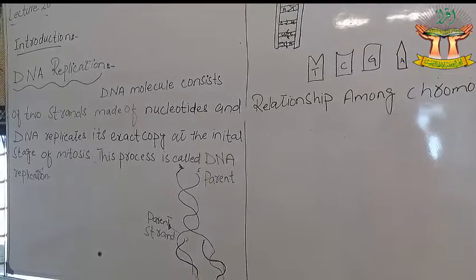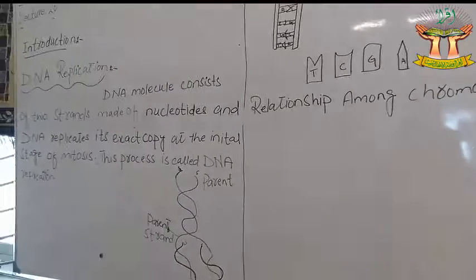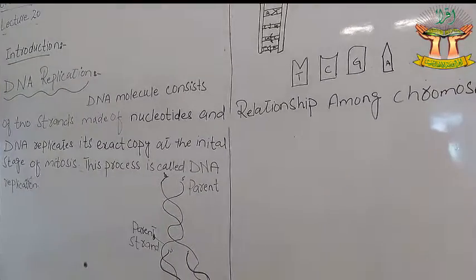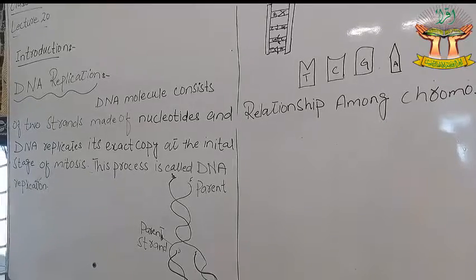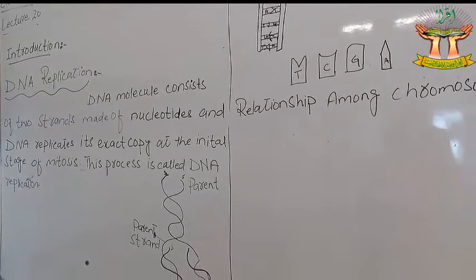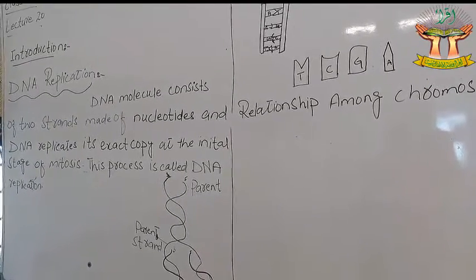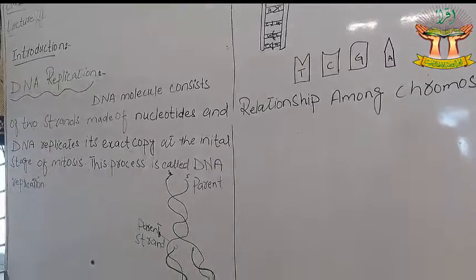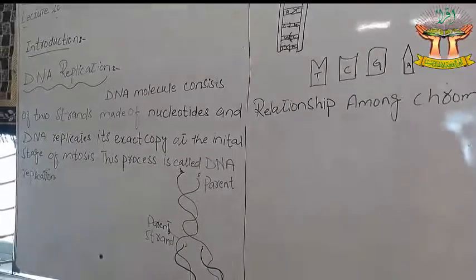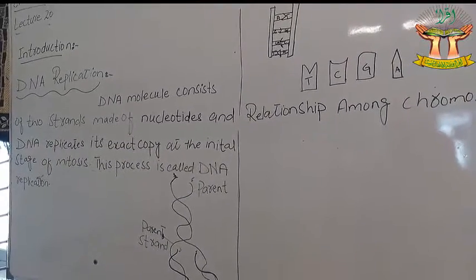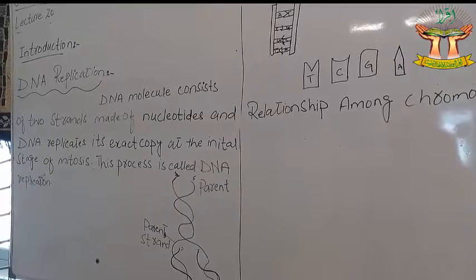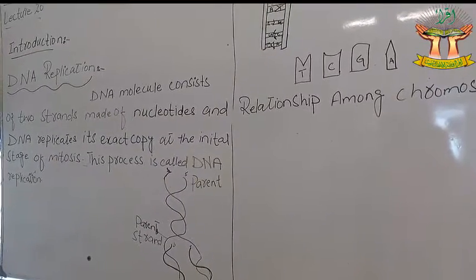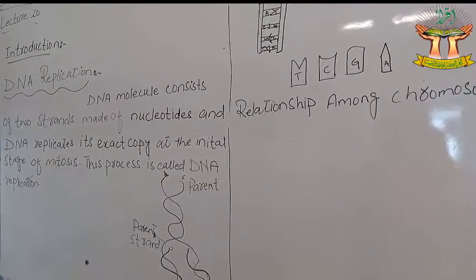Our first topic is DNA replication. DNA molecules consist of two strands made of nucleotides, and DNA replicates its exact copy at the initial stage of this process.